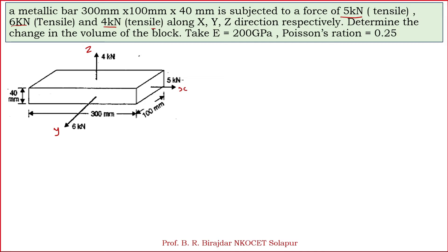They have given the Poisson's ratio that is 0.25. So for this we have to find out the change in volume. First we will write the given data.